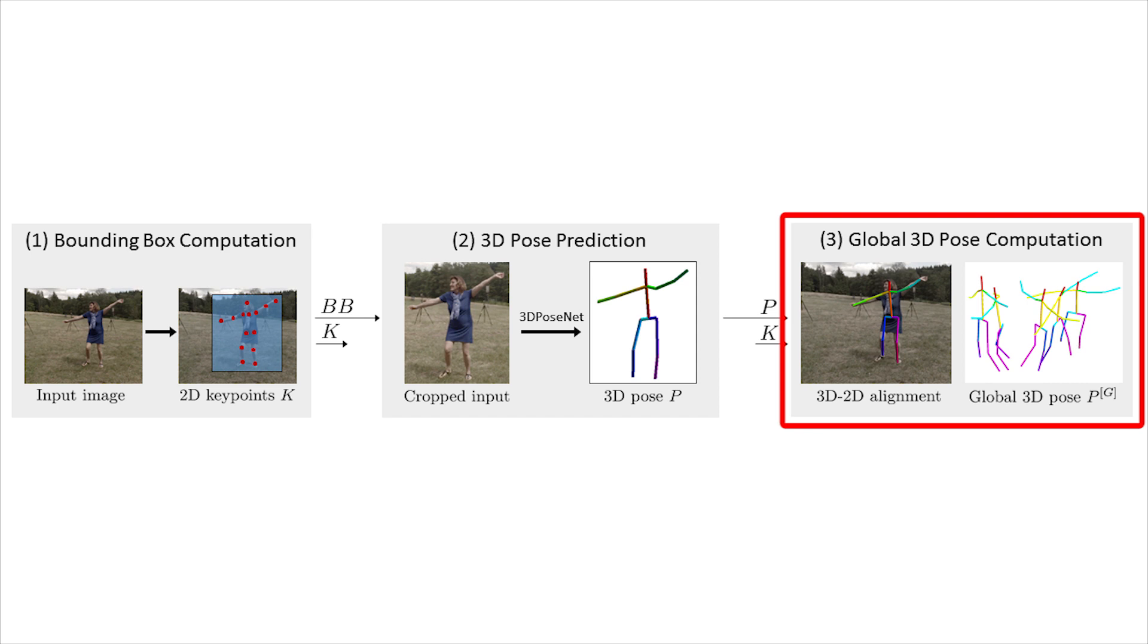Assuming calibrated camera intrinsics, we efficiently recover the global 3D position as the least-squares alignment of pelvis-centered 3D joint predictions and 2D joint detections. We further correct for perspective artifacts arising from bounding box cropping.